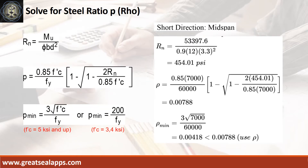Short direction mid-span moment equals 53,397.6 inch-pounds. Resistance factor equals 0.9, b equals 12 inches, and d equals 3.3 inches. The beam design ratio R_N equals 454.01 PSI, and reinforcement ratio rho equals 0.00788.